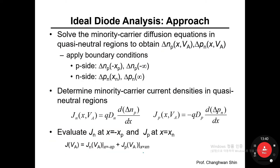Here is the big picture of how to do ideal diode analysis. Many students find it difficult to follow the detailed steps to arrive at the ideal diode equation, so remember there are three main steps. Step one is to solve the minority carrier diffusion equation in the quasi-neutral regions to obtain delta n sub p — the excess electron concentration in the P-side — as a function of position x and applied voltage V sub a.